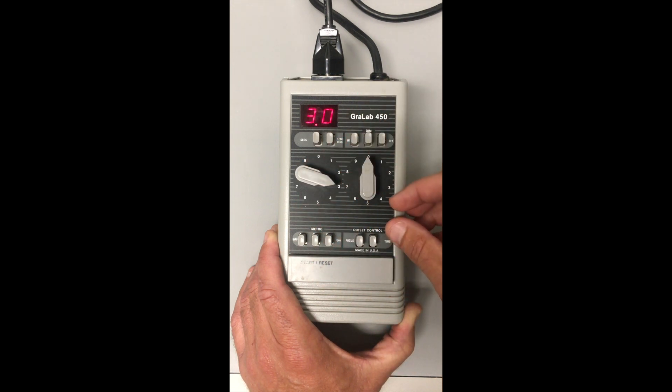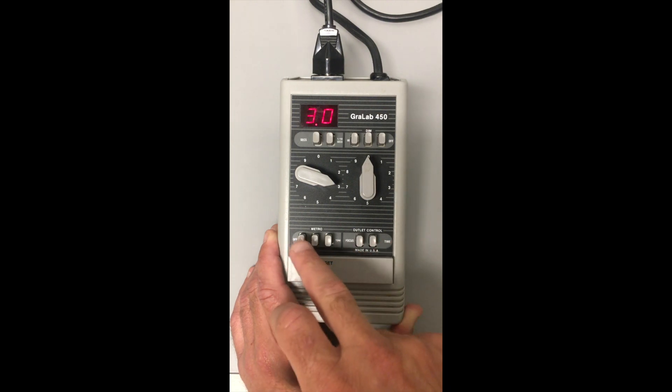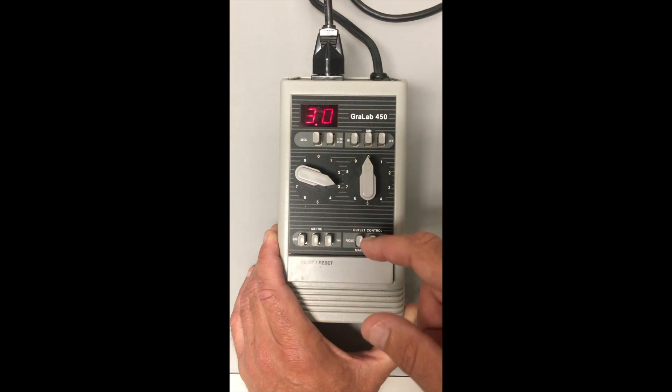Change it back here to three seconds. On the bottom now there's another set of five buttons. The three on the left control the metronome - it just says metro - and this simply sends out a beep as it counts down.